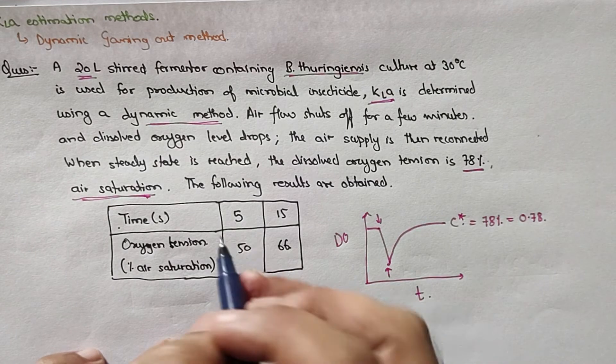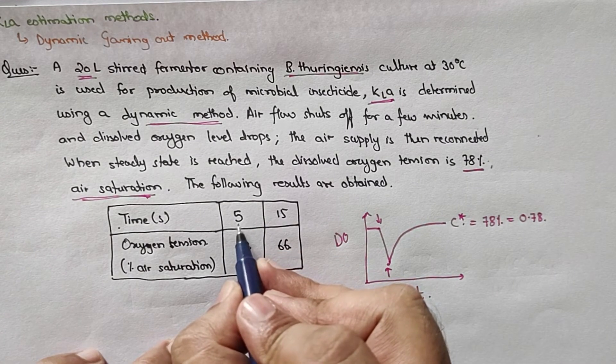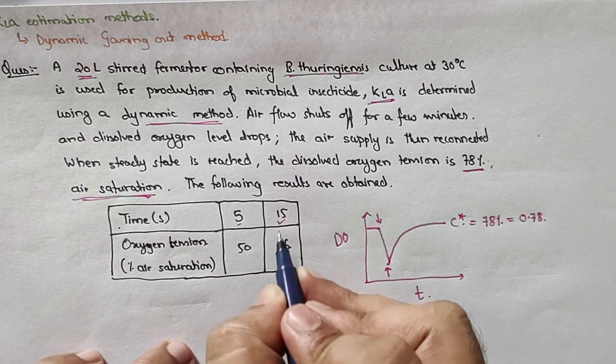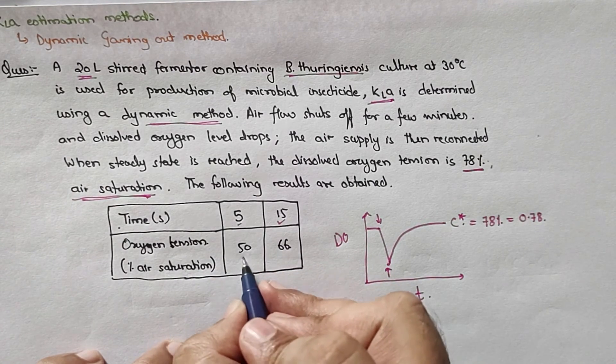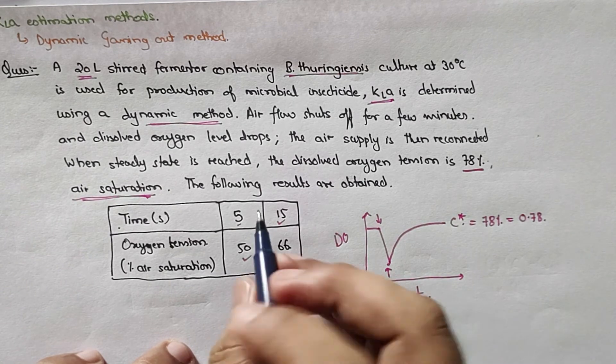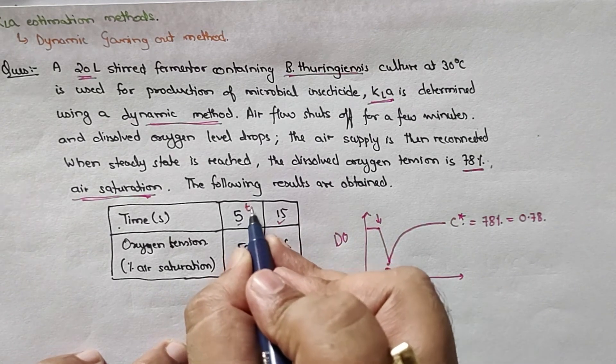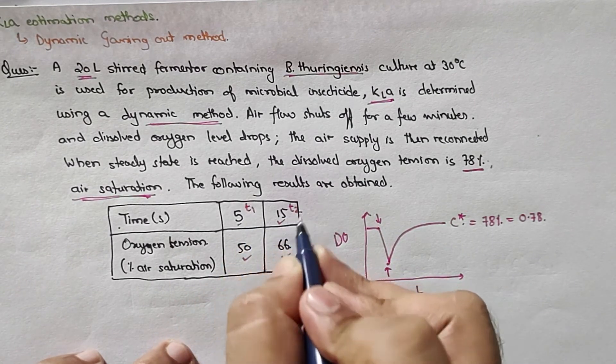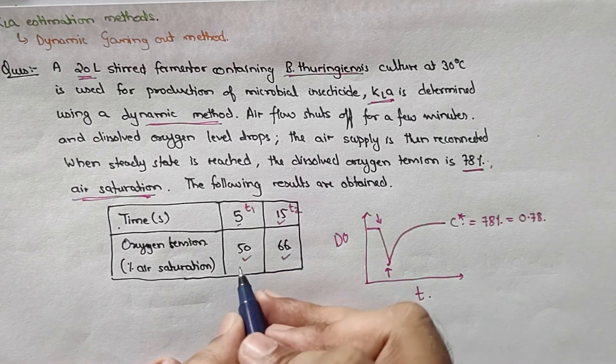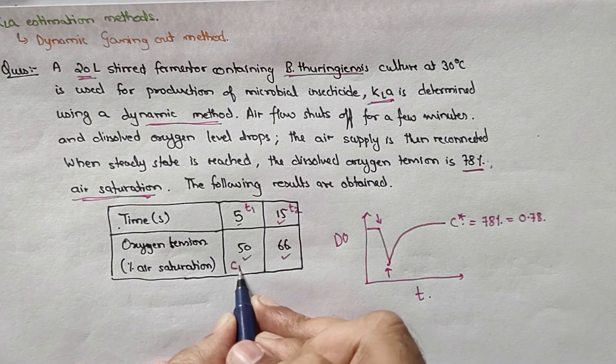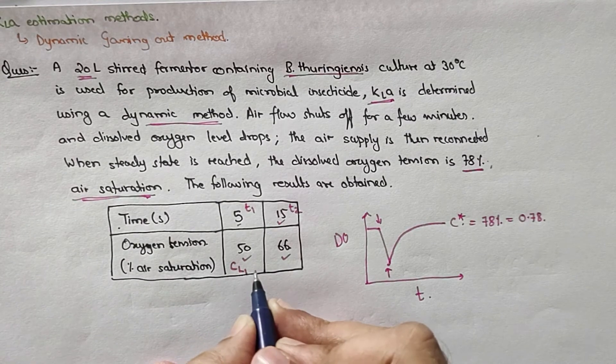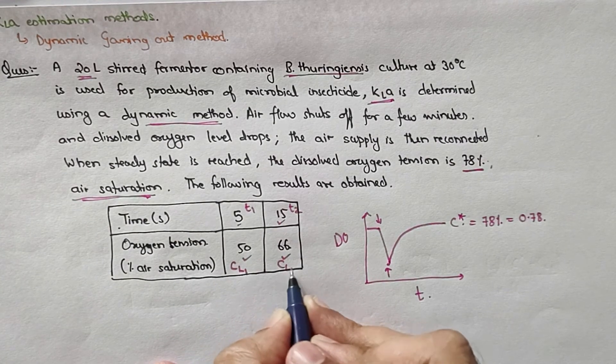What else have they given you? They have given you at different times, 5 and 15 seconds, the oxygen tension percentage air saturation was 50 and 66. So let us say this is my time T1 and this is my time T2, and this is my concentration CL1 and this is my CL2.